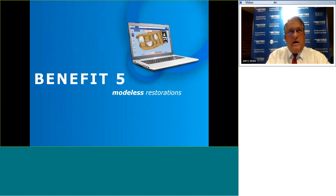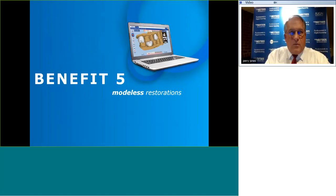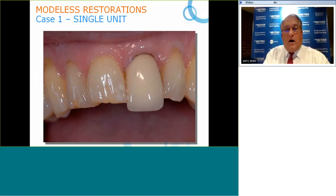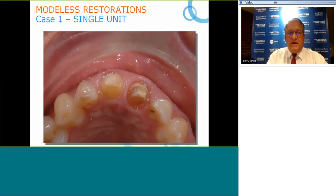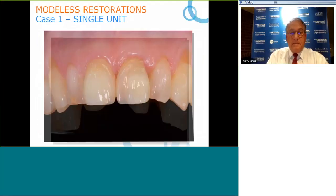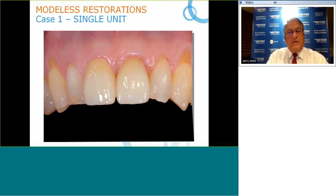Another benefit: because highly accurate data transfers to the computer as an STL file, we can do modelless restorations in a 100% digital workflow. Here are two crowns — a crown and a worn tooth — where we'll restore both. With minimal reduction, we've marked our margins, taken the digital scan, and now we design the crowns on computer, to be milled from zirconia.